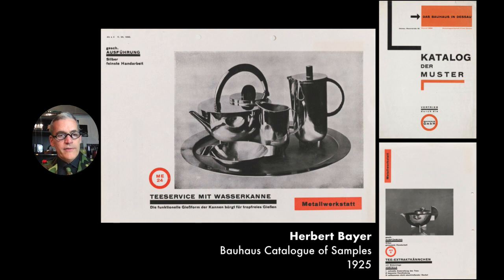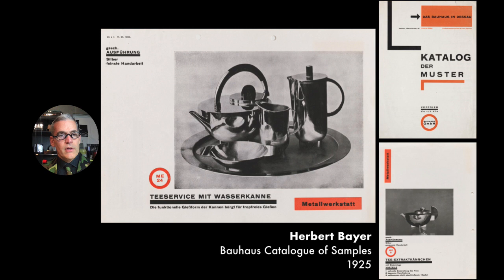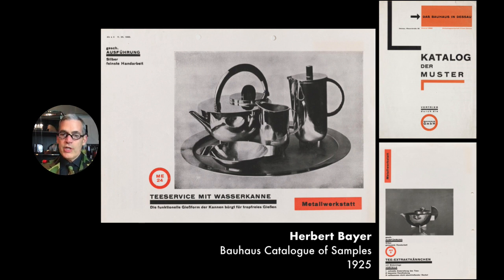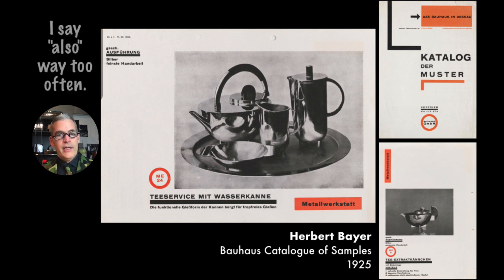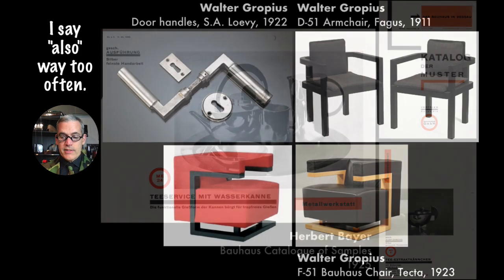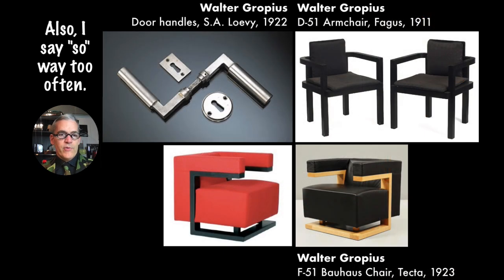In 1925, the Bauhaus moved to Dessau with the understanding that it would try to finance itself with the manufacturing and sale of goods it produced. A corporation was set up with outside financing to manufacture the school's designs, but the sales were not great because the designs were just too severe for the time. Also, these objects may look machine-made but are not actually industrially produced — they're still mostly made by hand as craft efforts, and as a result they were very expensive.